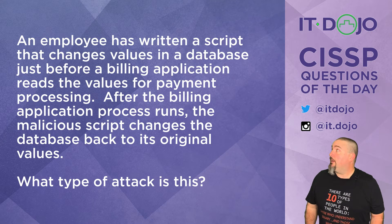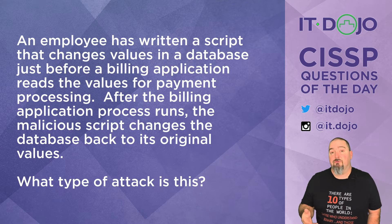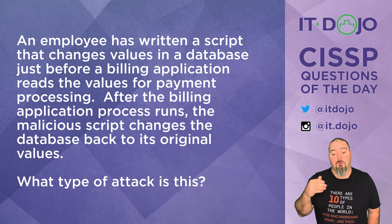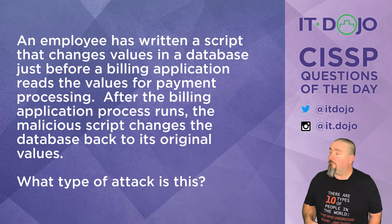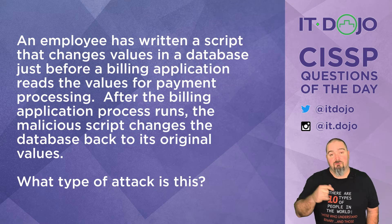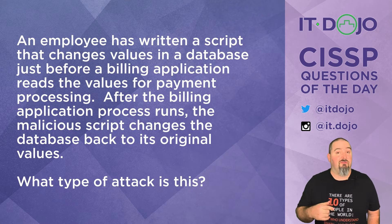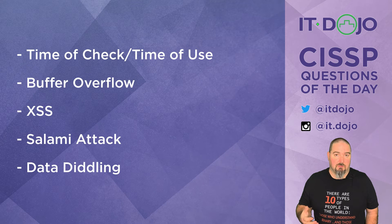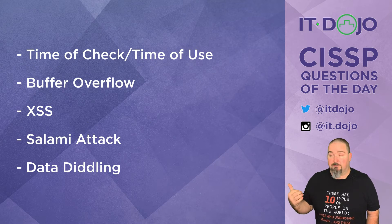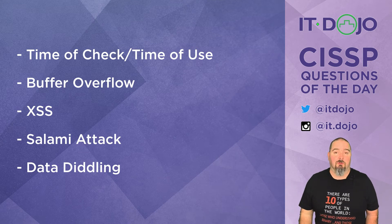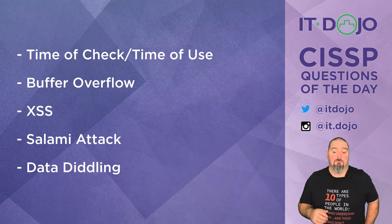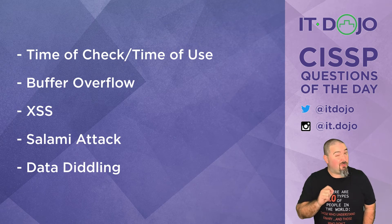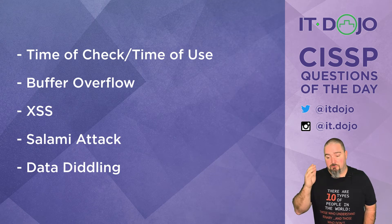Quite a few words in question two: a malicious employee has written a script that goes in and changes values in a database prior to a billing application reading those values for generating reports or bills. After the billing application runs, the script changes the values back to their original data. What type of attack is this? There are your answer choices — think it through. The first answer choice is time-of-check/time-of-use — no, that's close but not right.